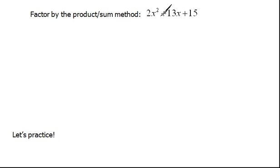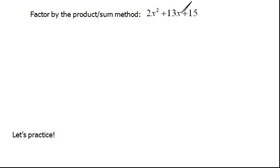So when we look at this same problem, again, go through your list of what to do first, what to do second. The first rule of factoring is always pull out the GCF. There's not one here, so we look to see how many terms we have. We have three terms, which says that we either do trial and error or product sum method. Because there is a number in front of the x squared, we're going to use the product sum method.